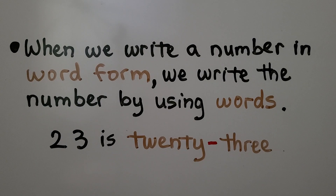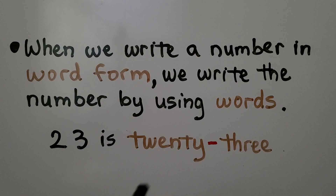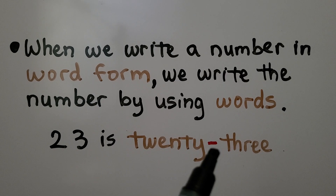When we write a number in word form, we write the number by using words. 23 is twenty-three, with a hyphen between twenty and three.